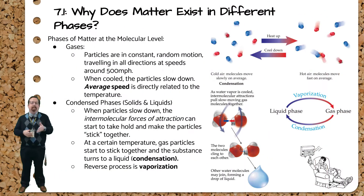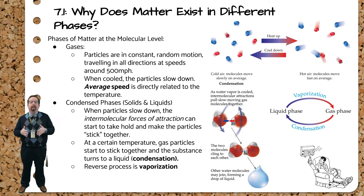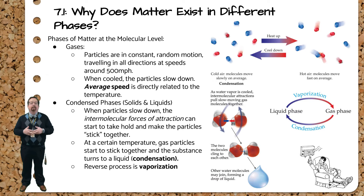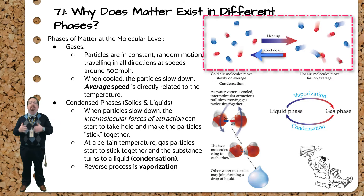We've talked about the phases of matter before, but mostly in regards to their macroscopic properties. Let's look at them at the molecular level. Gases consist of particles that are in constant random motion, traveling in all directions. They clock in with speeds of around 500 miles per hour. Each of these particles is moving in its own direction and at its own speed, so we tend to talk about the average speed of the particles. The average speed is directly related to the temperature.